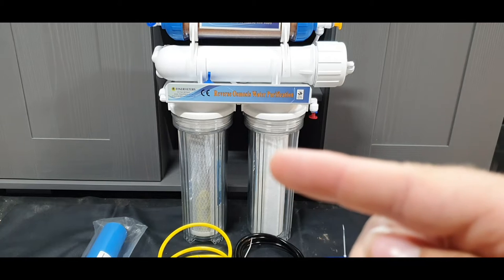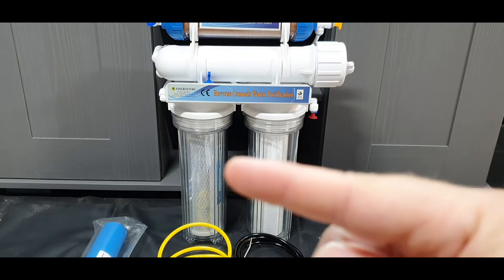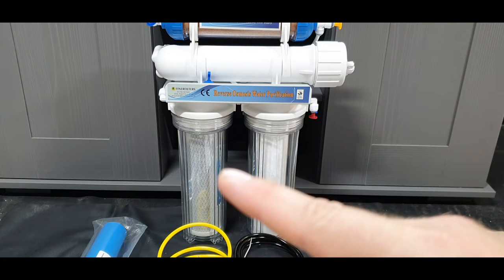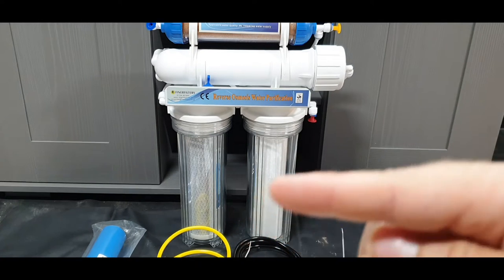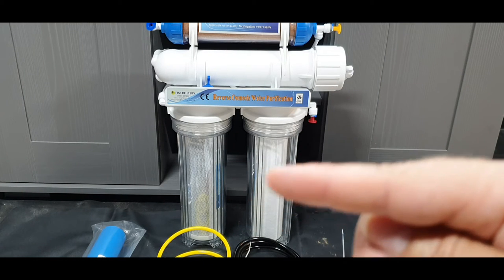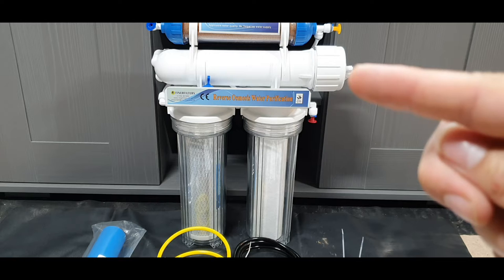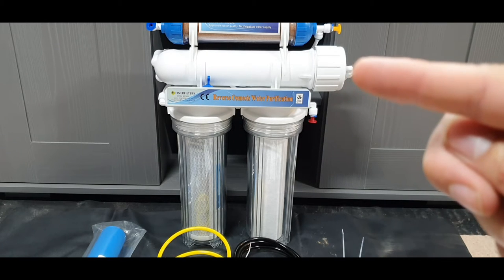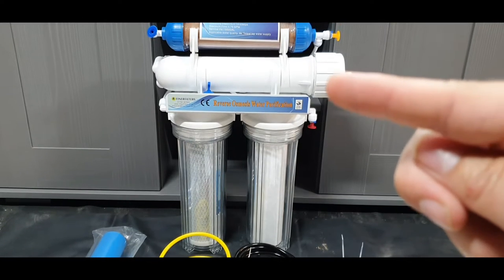The next stage is then the carbon filter, and this is where a lot of the chlorines and organics gets taken out. The first two sections are just to take out the bulk of the rubbish before we go through the really fine RO membrane. That's where a lot of the smaller things get taken out, and essentially once it's gone through the RO membrane it should be almost pure water.